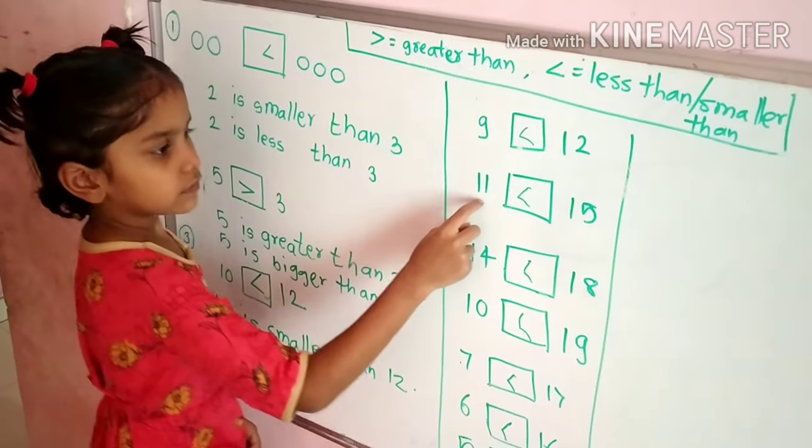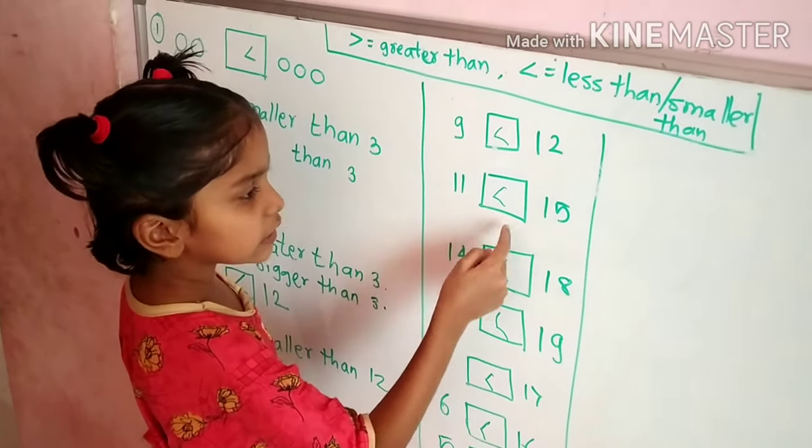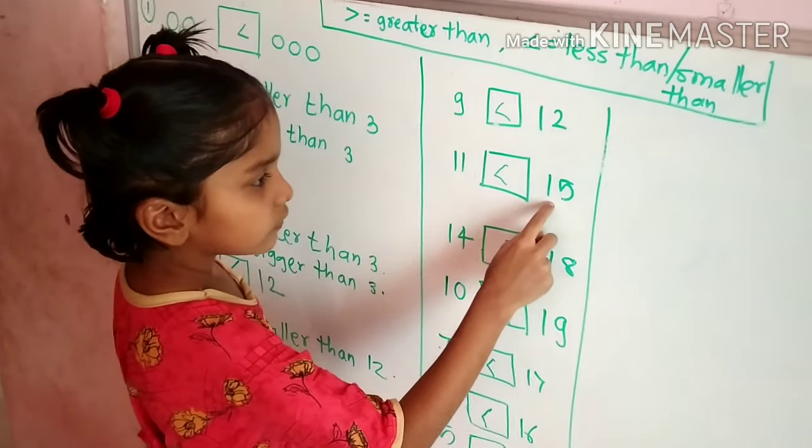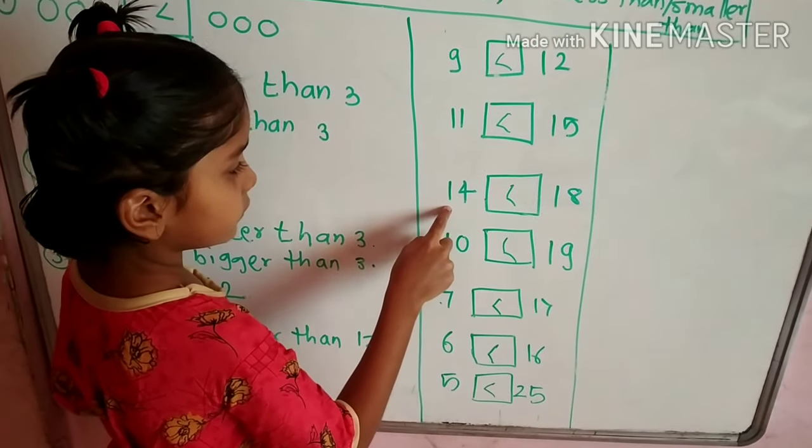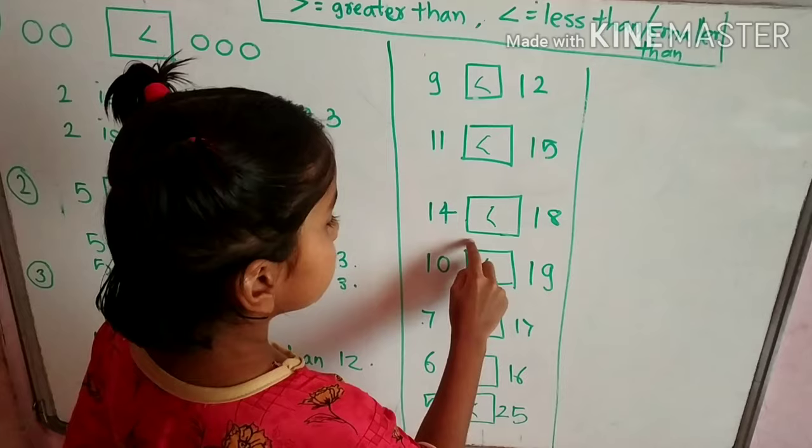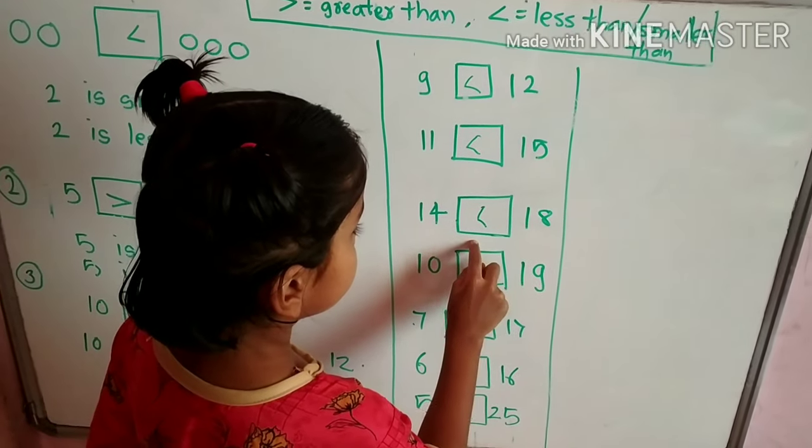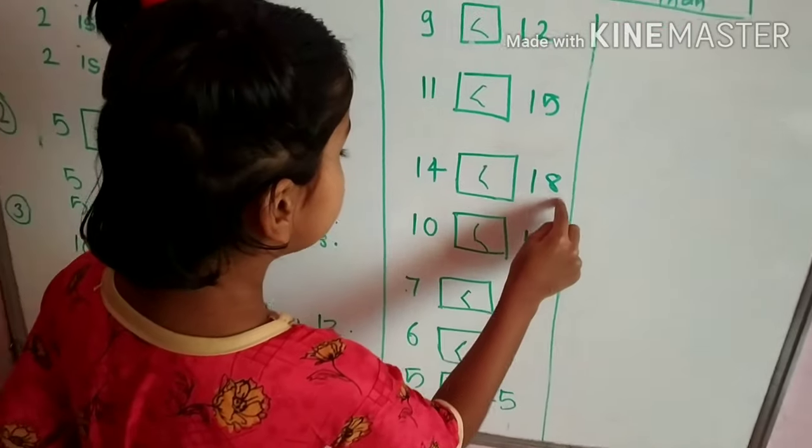11 is smaller than 15. 14 is smaller than 18.